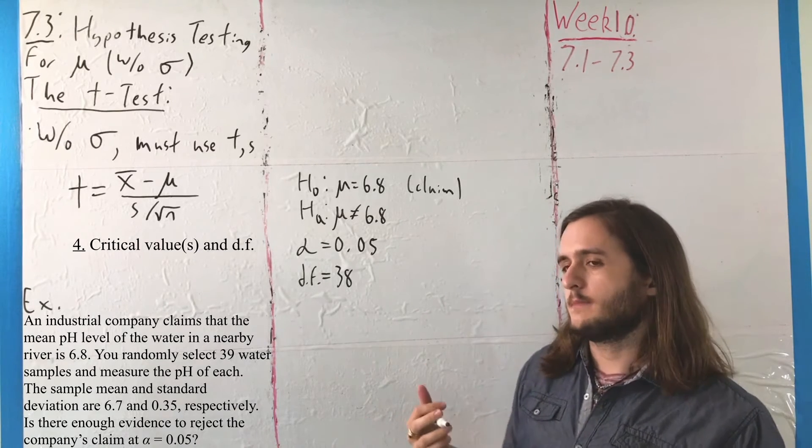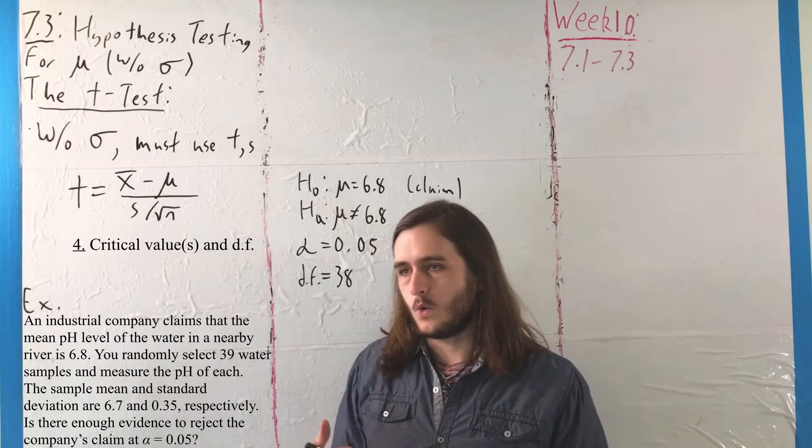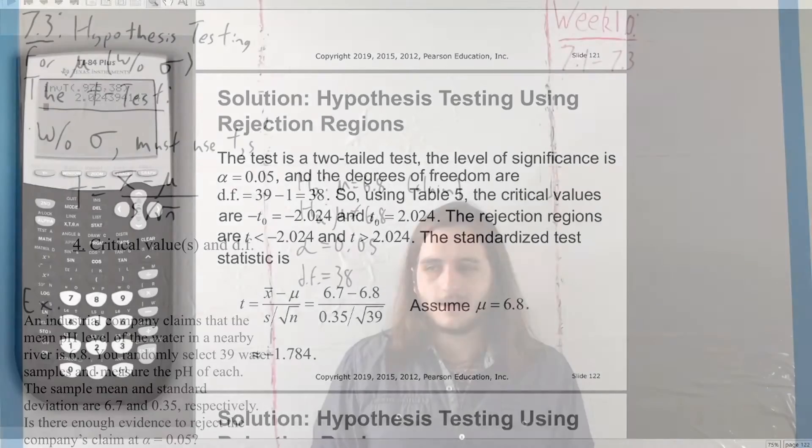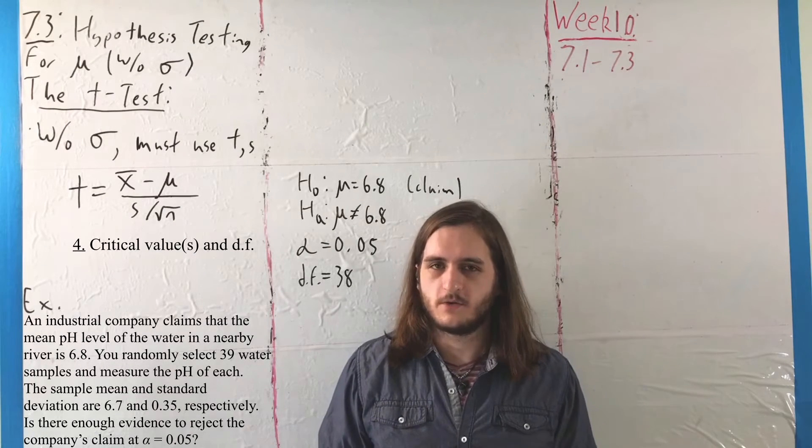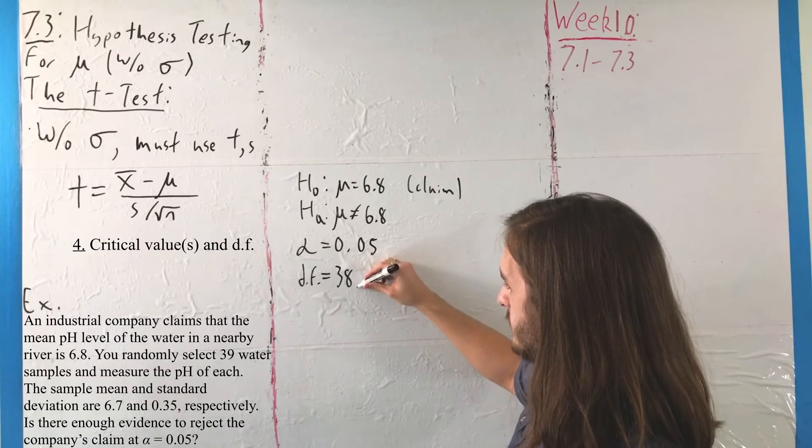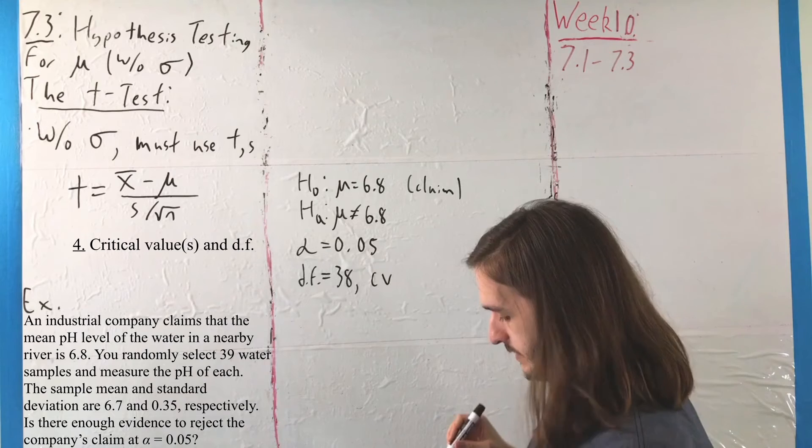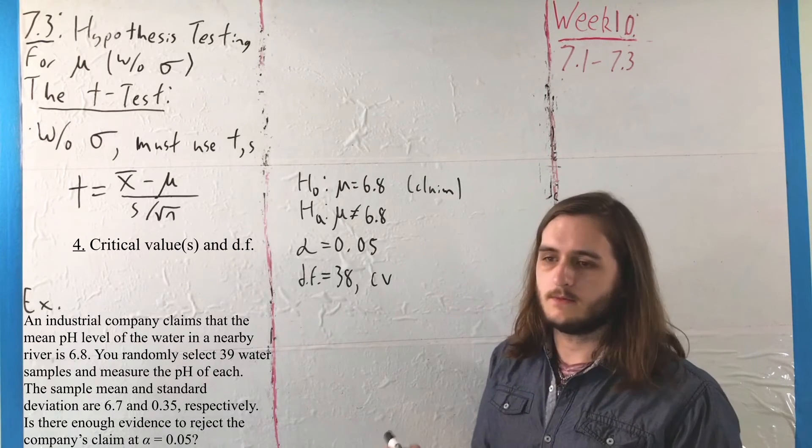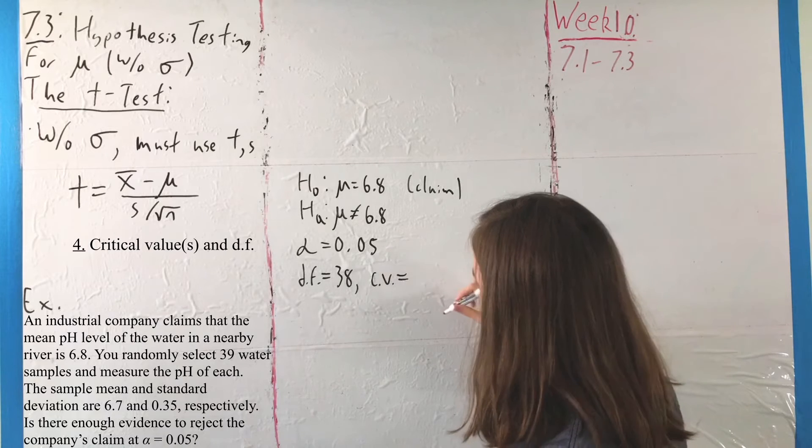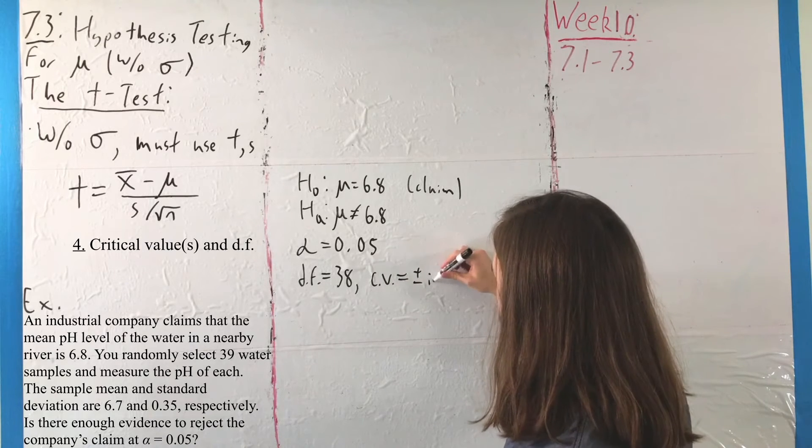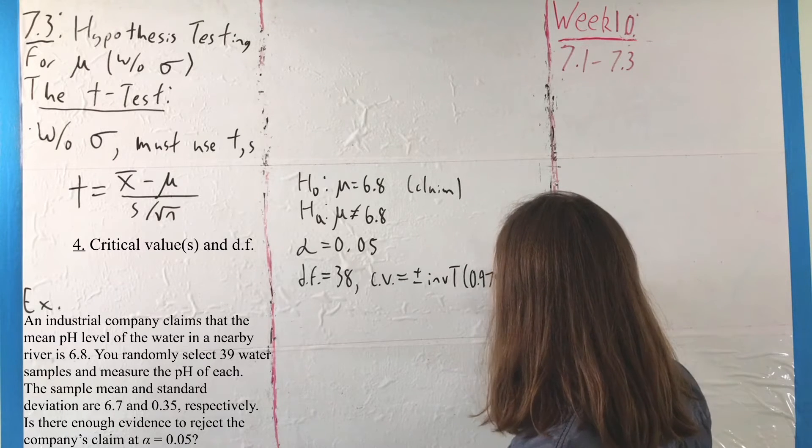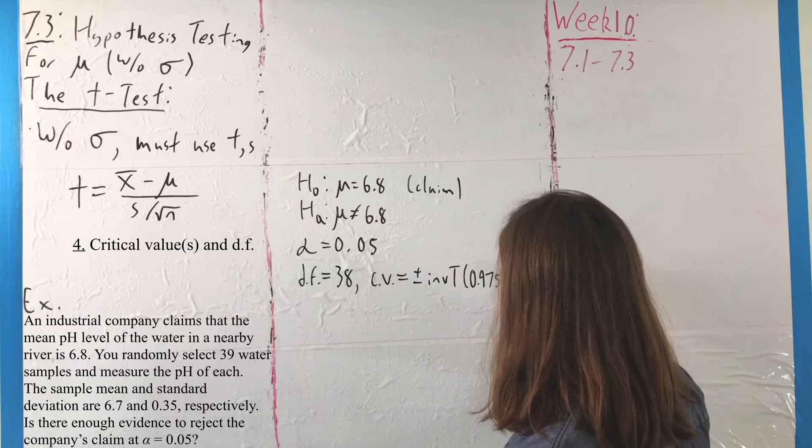And then, to find our critical values, depending on how we want to think about this, we can either use the table or the calculator. I prefer the calculator, but that's, I think, a few words you've heard me say a few times at this point. However we want to handle this, we just have to be careful with the fact that our critical values here will come from both tails. So, we are getting positive and negative values.